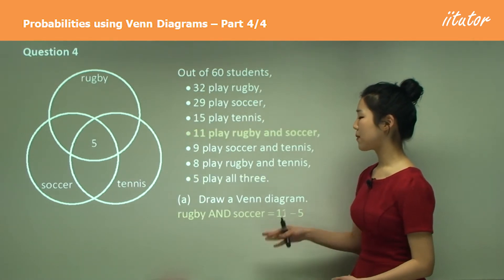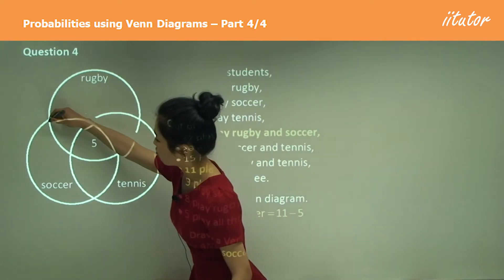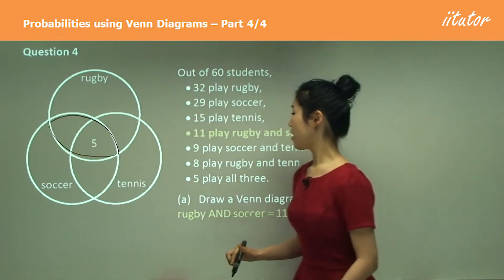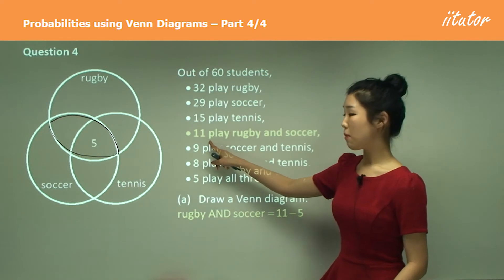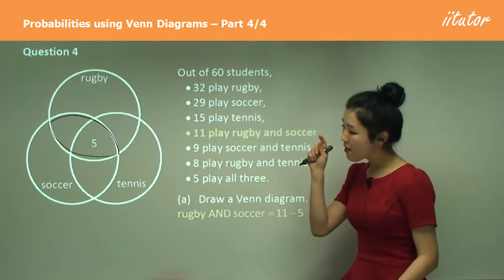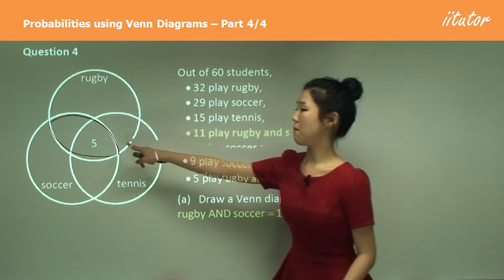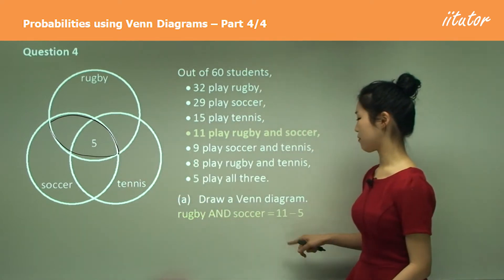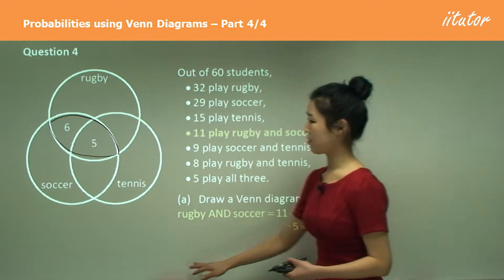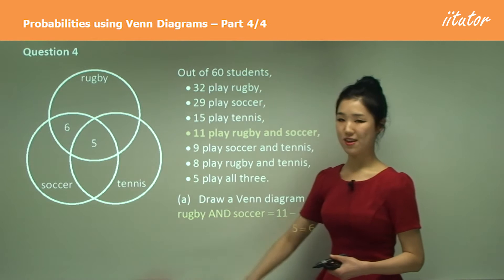Now to get rugby and soccer — this whole football-looking shape here — it's going to be 11. But we know that five play rugby, soccer, and tennis. So to find the number of people who play just soccer and rugby, we do 11 minus that overlapping part of five, which is six. So you put that six in there.